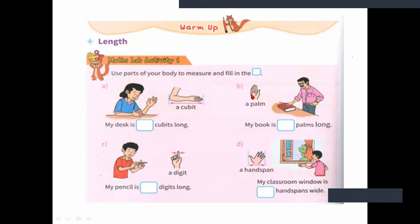Palm means from here to here — the inside palm part. If you measure with your palm, you can see this red mark — from here to here is palm. This is called palm measurement. Hand span measurement is from thumb finger to the little finger. And cubit is from the elbow to the middle finger tip — from here to here will be the cubit.